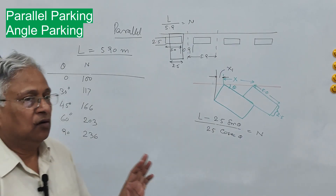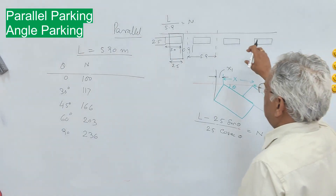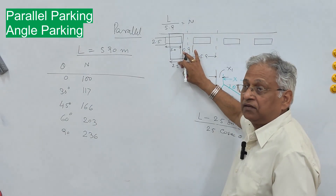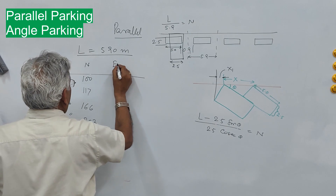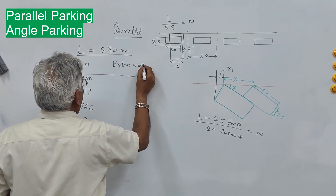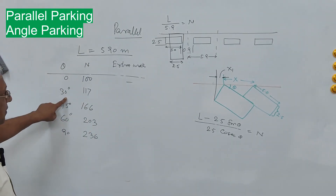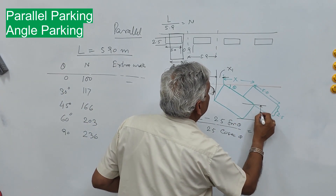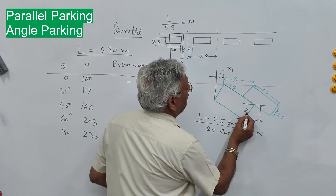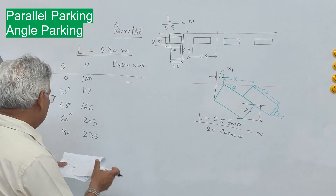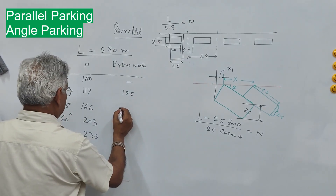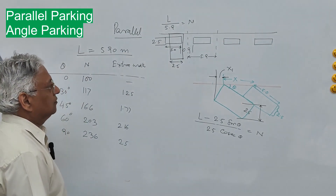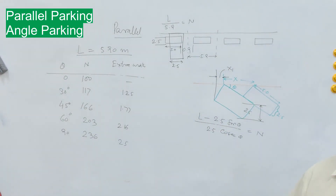At the same time, the width required to park a vehicle differs between parallel and perpendicular systems. The extra width engaged by parking compared to parallel parking is: 1.25 meter for 30-degree parking, 1.77 meter for 45 degrees, 2.16 meter for 60 degrees, and 2.5 meter for 90-degree parking. This illustrates the trade-off between parking capacity and road width consumed.